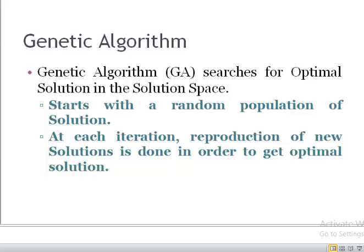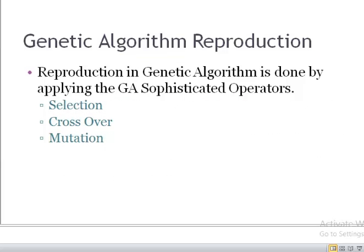Reproduction is done on the basis of existing solutions in order to get the optimal solution. Today we are going to discuss how reproduction is done, how in every generation the current solutions are used to reproduce, which solutions are selected for reproduction, and how that reproduction is actually performed.